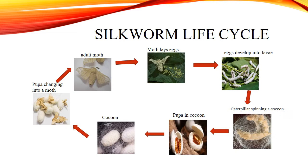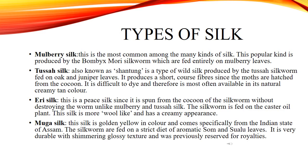Types of Silk. Mulberry Silk: This is the most common among the many kinds of silk. This popular kind is produced by the Bombyx mori silkworm, which are fed entirely on mulberry leaves.